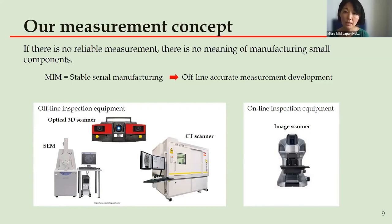These are some of our deployed measurement equipment. Here is the top optical 3D scanner. Our 3D scanner has a high-resolution optical digitizer that delivers rapid and precise three-dimensional measuring data using blue light fringe technology. The smallest spot size is 4 microns.